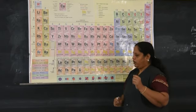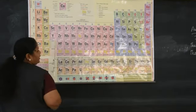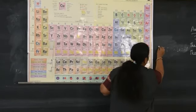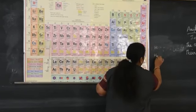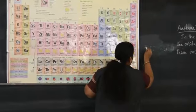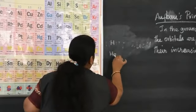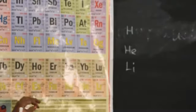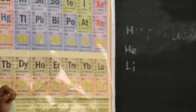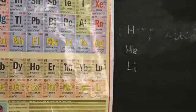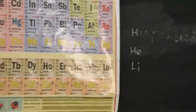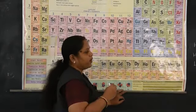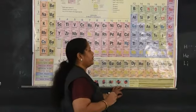The first element in the periodic table is hydrogen, next is helium, third is lithium, arranged in increasing order of atomic number. These elements are further classified into S block, P block, D block, and F block elements.